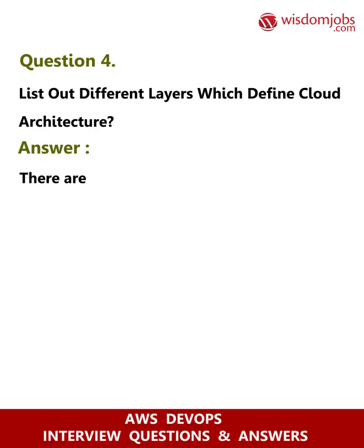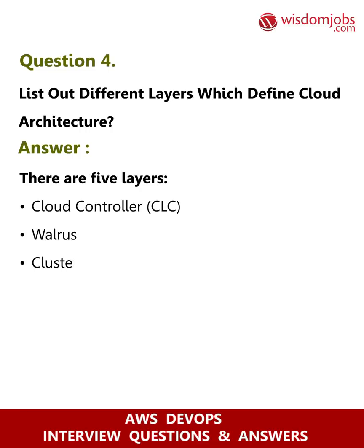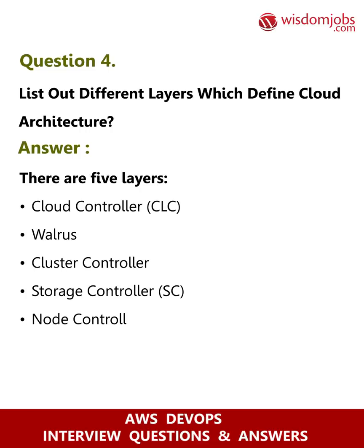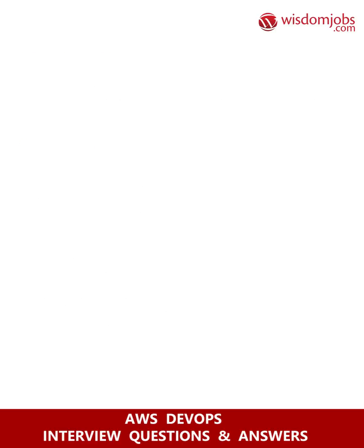Question 4: List out the different layers which define cloud architecture. Answer: There are five layers — Cloud Controller (CLC), Walrus, Cluster Controller, Storage Controller (SC), and Node Controller (NC).